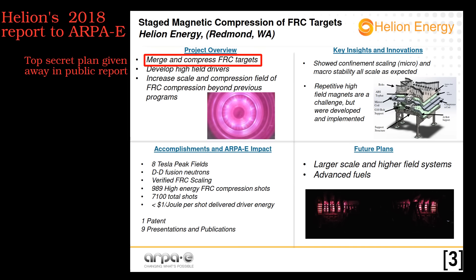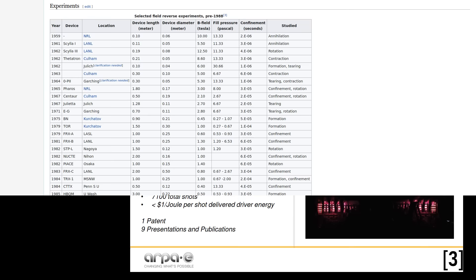Helion is reportedly using the Field Reversed Configuration, or FRC, approach to fusion. FRC machines have been built extensively since the 1960s, so this is absolutely nothing new.